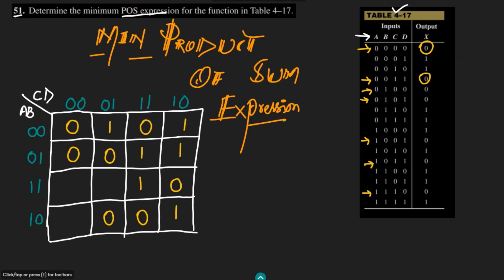This is the same table which we have seen in our previous question. What I have to do here is draw the Karnaugh map using the same procedure, but here as we have the product of sums or POS, I have to make groups of these zeros. This is the first group, this is the second group, this is the third group, and this is the fourth group. This one cannot be combined with any other, so this is the last one.